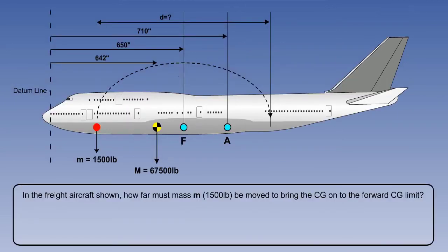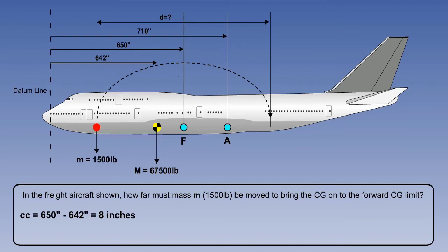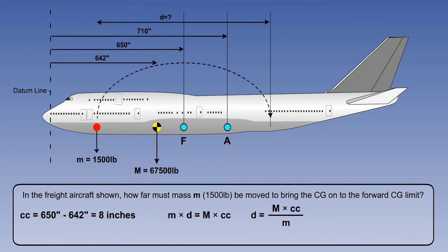Let us look at another example, using moving mass to bring an out-of-limit centre of gravity back into limits. In this example, the mass to be moved is known, and the question asks what distance the mass has to move from forward to aft to bring the centre of gravity onto the forward limit. The first thing is to establish the change of centre of gravity, CC, required to bring it onto the forward limit. The value of CC is obtained by subtracting the existing centre of gravity distance from datum from the forward limit distance from datum. We can now apply the formula for moving mass, m times D equals M times CC, and transpose for the unknown distance the mass is to be moved, D, before entering the known data.